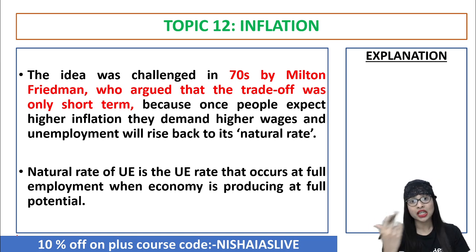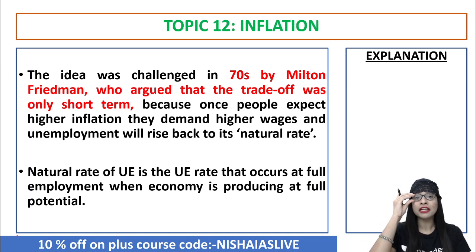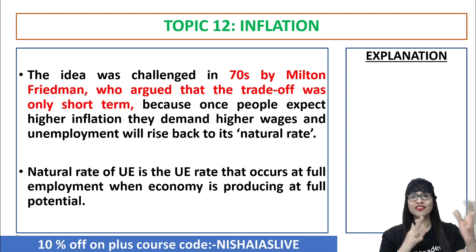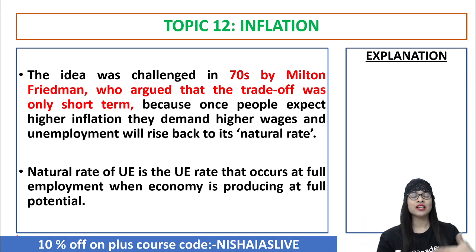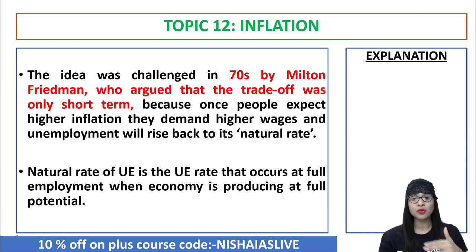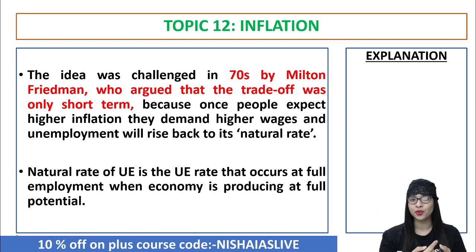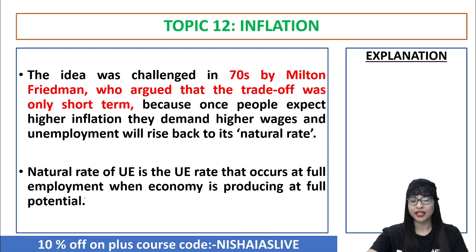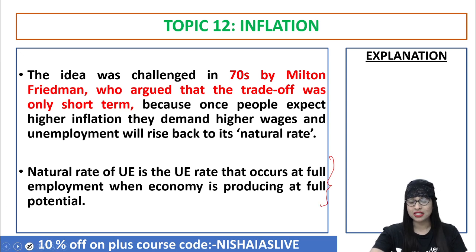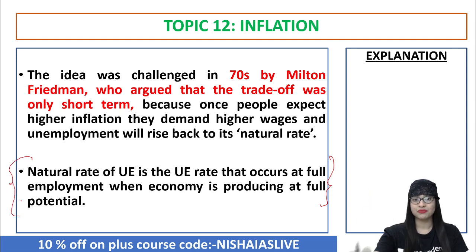The idea was challenged by another economist in the year 1970, Milton Friedman, a monetary economist. He said that such a trade-off or relationship between unemployment and inflation is only short-term — you can't say it holds for the long term. People expect a rise in price or higher inflation, then they demand higher wages, and unemployment rises back to its natural rate. The natural rate of unemployment is the unemployment rate which occurs at full employment when the economy is producing at full potential — which is a hypothetical condition, since full employment is always an assumption in classical or traditional economics.